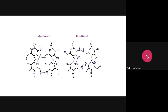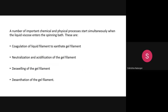The cellulose I and II structures look similar in terms of inter- and intramolecular hydrogen bonding. During the viscose rayon spinning process, a number of physical and chemical processes start simultaneously. Four steps are very important: the first is coagulation of the liquid filament to the xanthate gel filament.